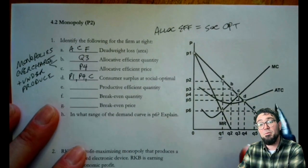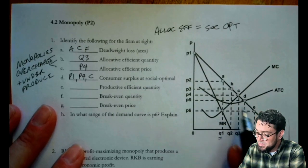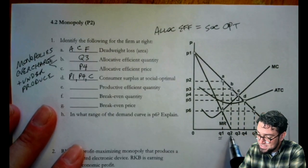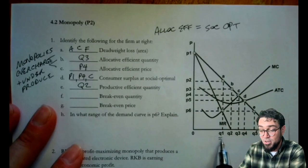Productively efficient quantity is where they are at the minimum ATC, and that's going to occur right here at the minimum ATC. And I come down from that and I find that's equal to Q2. So we're obviously not there either because we are producing Q1.